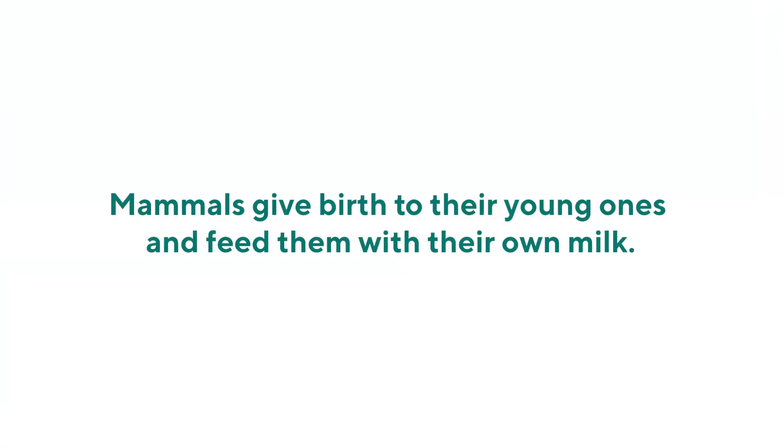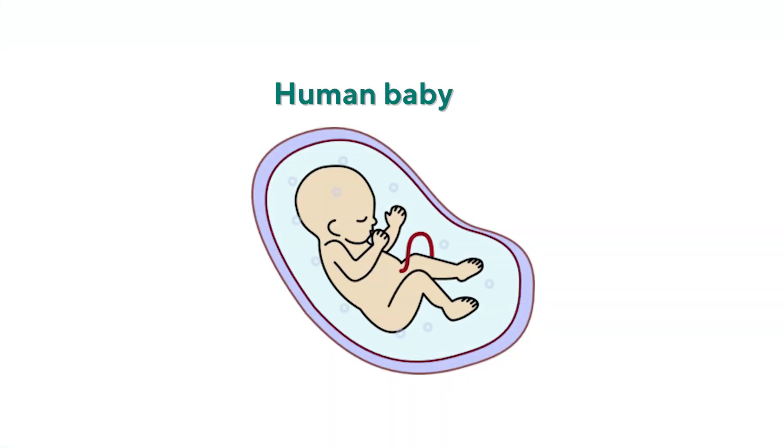Now let's look at animals that reproduce by giving birth. These kinds of animals are called mammals. Examples include human beings, dogs, cats, lions, tigers, and elephants. The mothers carry their young ones inside their wombs, and when they are fully developed, the babies come out. That's how you came about — you were inside your mummy's tummy, or her womb, for nine whole months. There is a tube called the umbilical cord that used to connect you with your mother, carrying oxygen and food while you were inside her tummy.